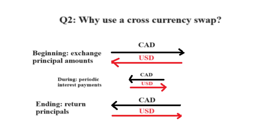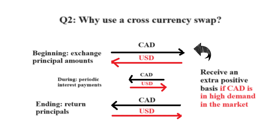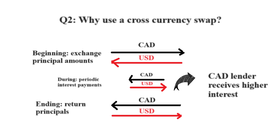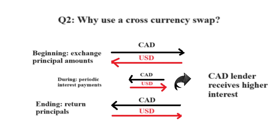In the previous example, we saw that the trader wanted to sell CAD and buy USD. Suppose that CAD is in high demand in the currency market. If this is the case, then the trader would receive an extra percentage of interest because he is the one lending out the Canadian dollars. This means that at periodic interest payment dates, the CAD lender would receive a higher amount of CAD interest.